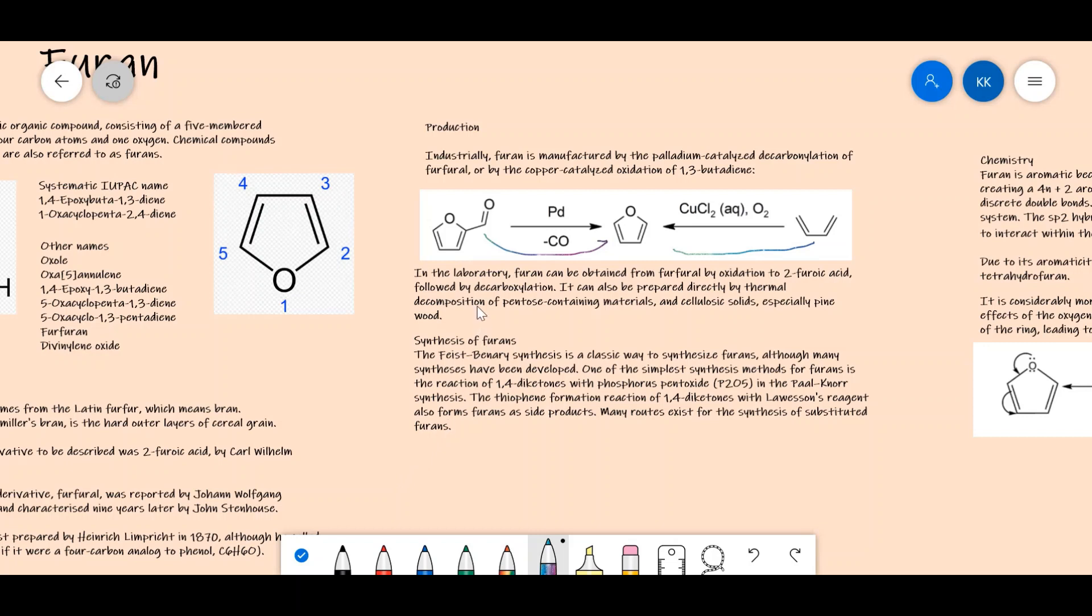In the laboratory, furan can be obtained from furfural by oxidation to 2-furoic acid followed by decarboxylation. It can also be prepared directly by thermal decomposition of pentose-containing materials and cellulosic solids, especially pine wood. Here, thermal decomposition refers to decomposition in the presence of heat.